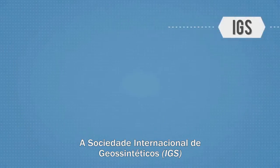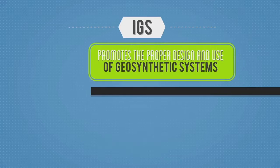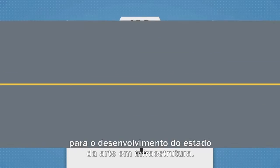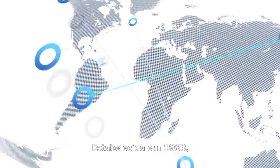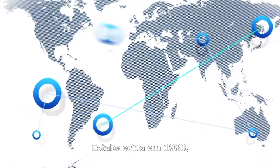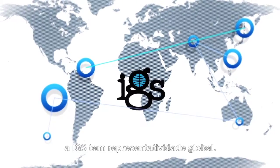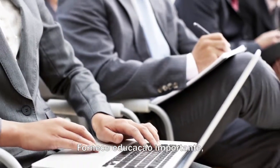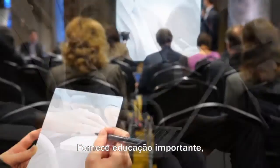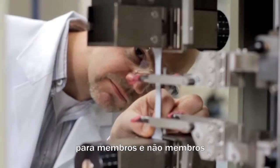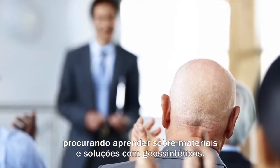The International Geosynthetic Society promotes the proper design and use of geosynthetic systems for state-of-the-art infrastructure development. Established in 1983, the IGS membership represents global participation. It provides important education, training, and informational services to members and non-members seeking to learn about geosynthetic materials and solutions.